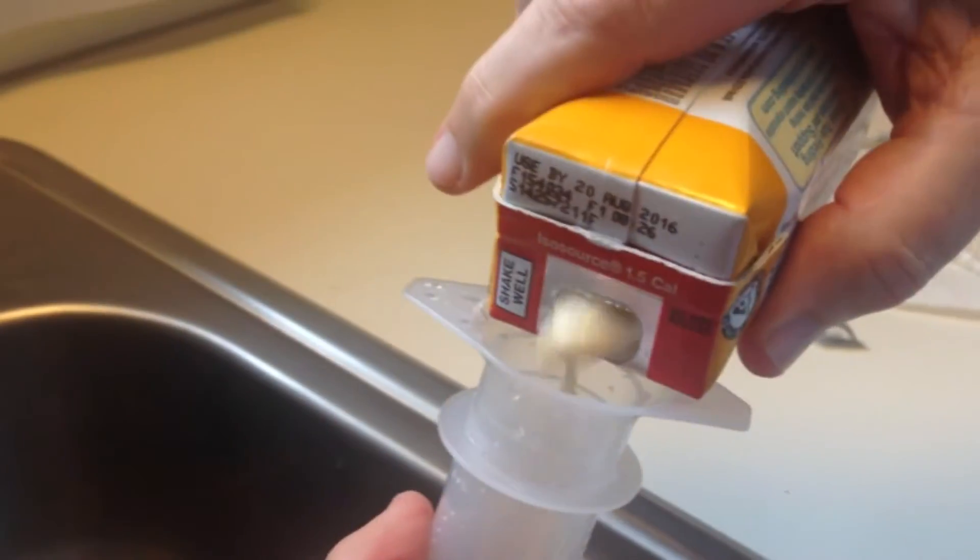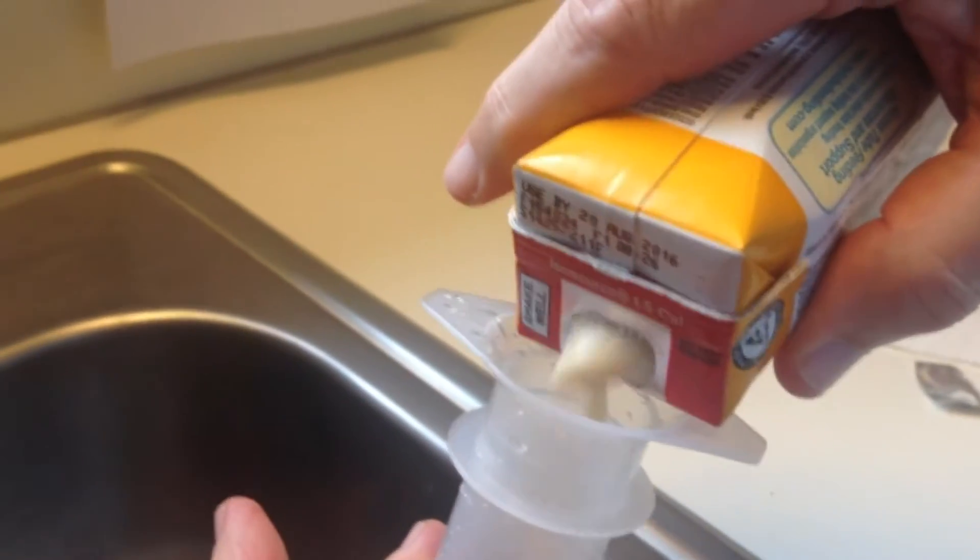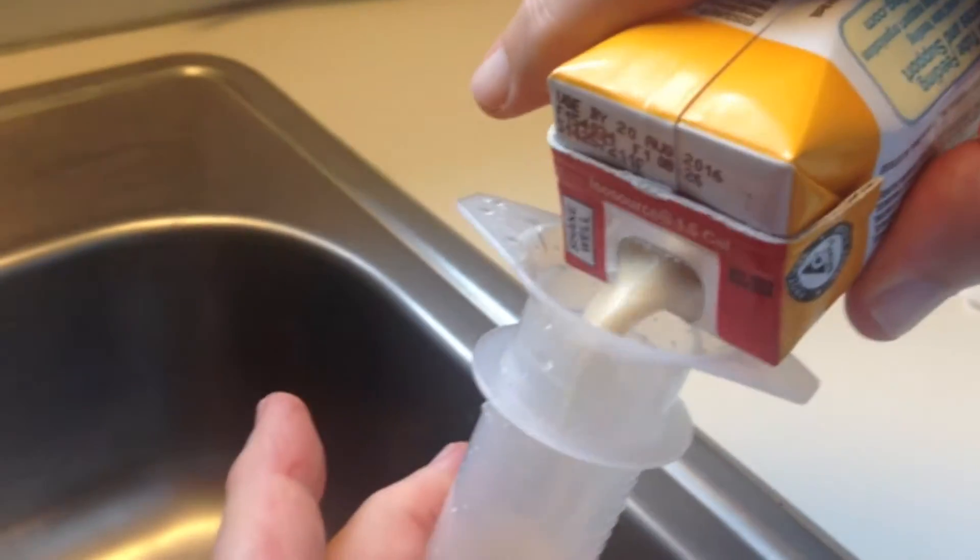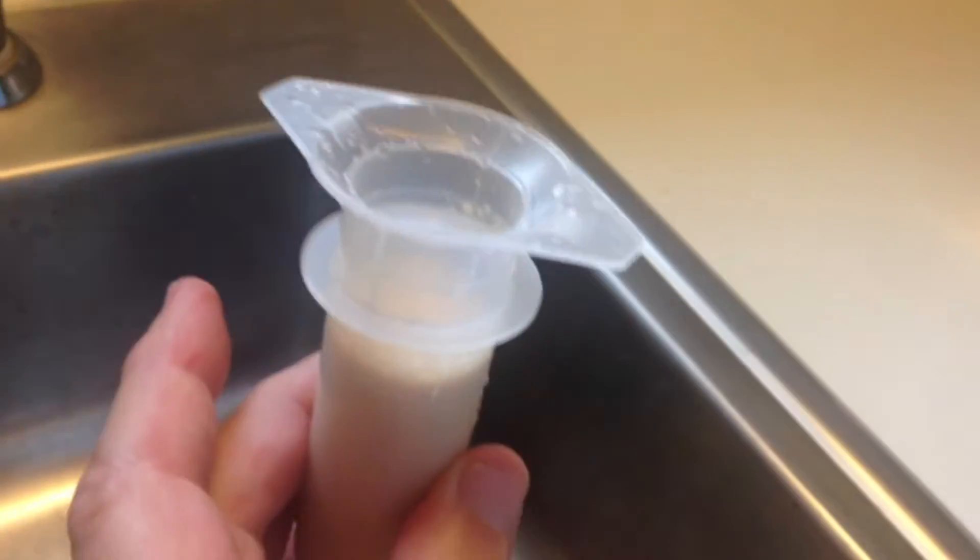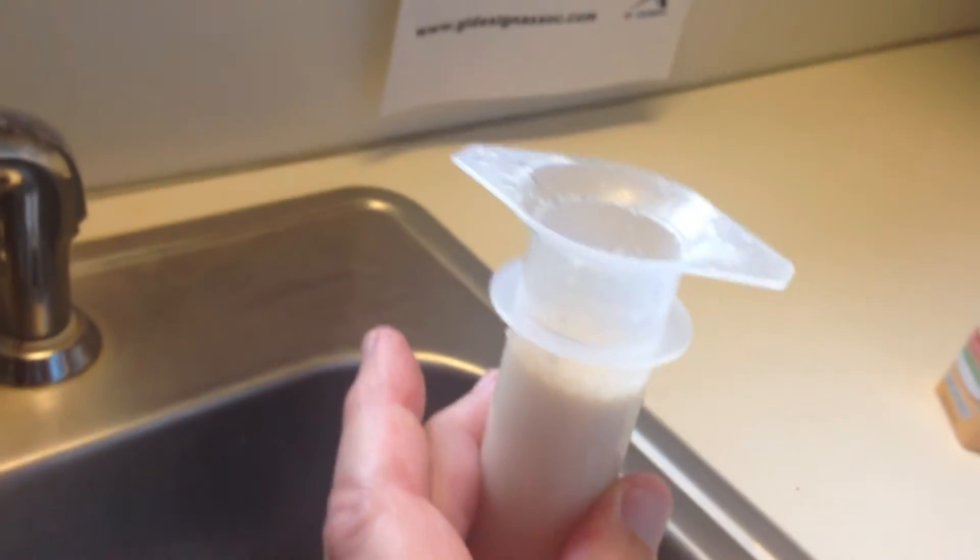We will fill up the syringe with 20 cc's of formula. We will now open up the hemostat and time it.